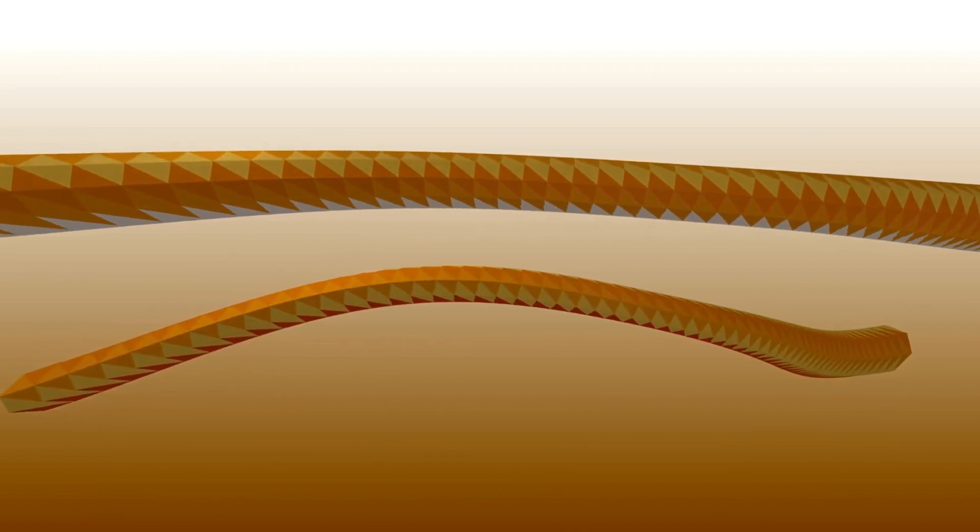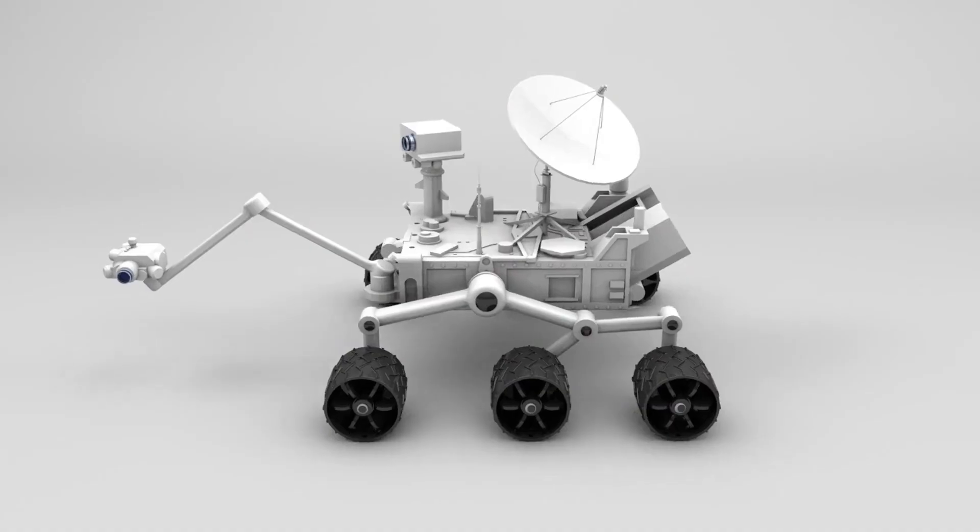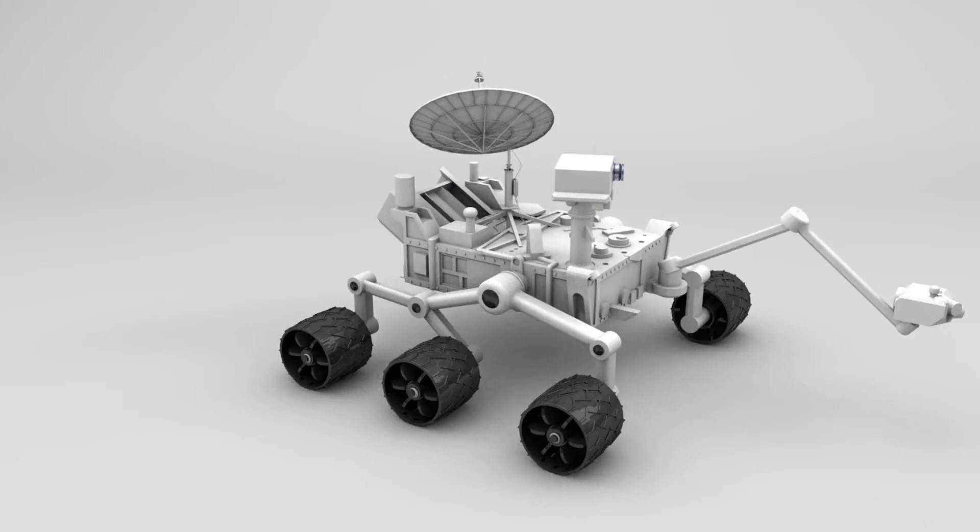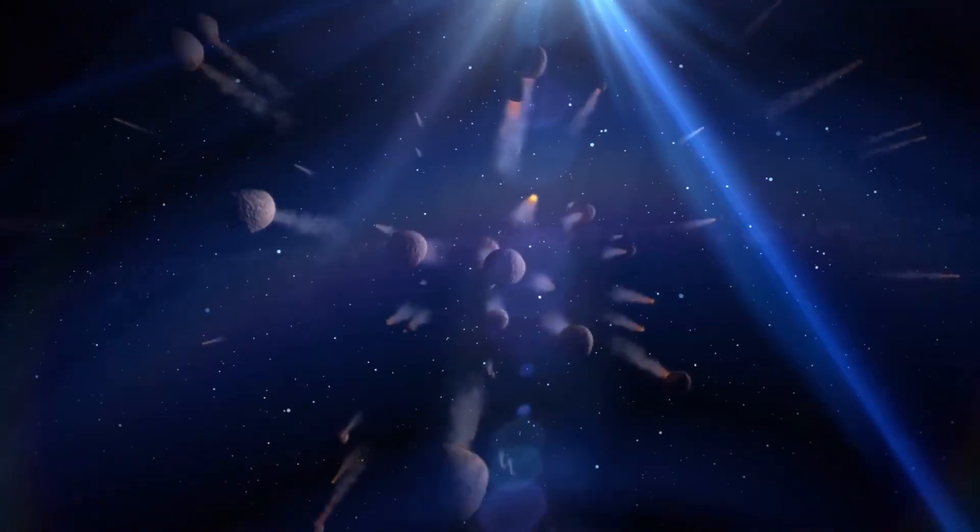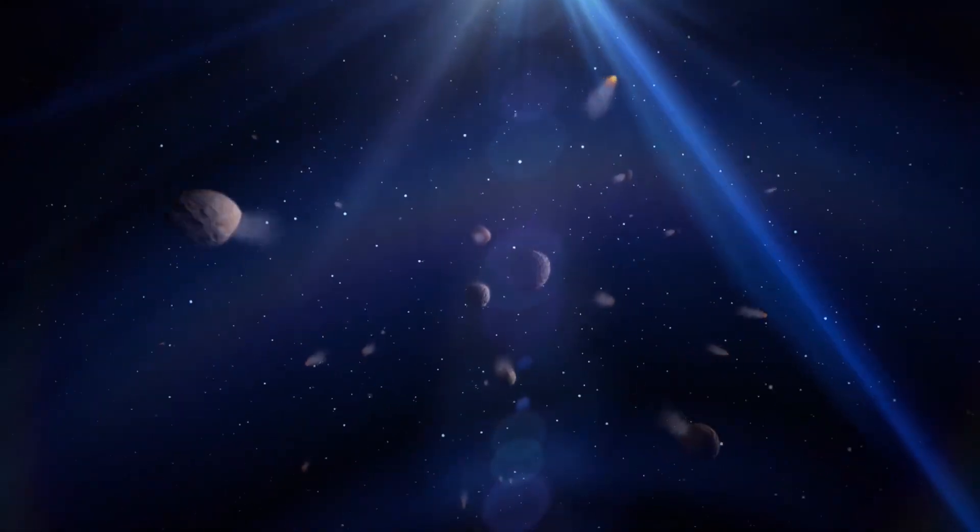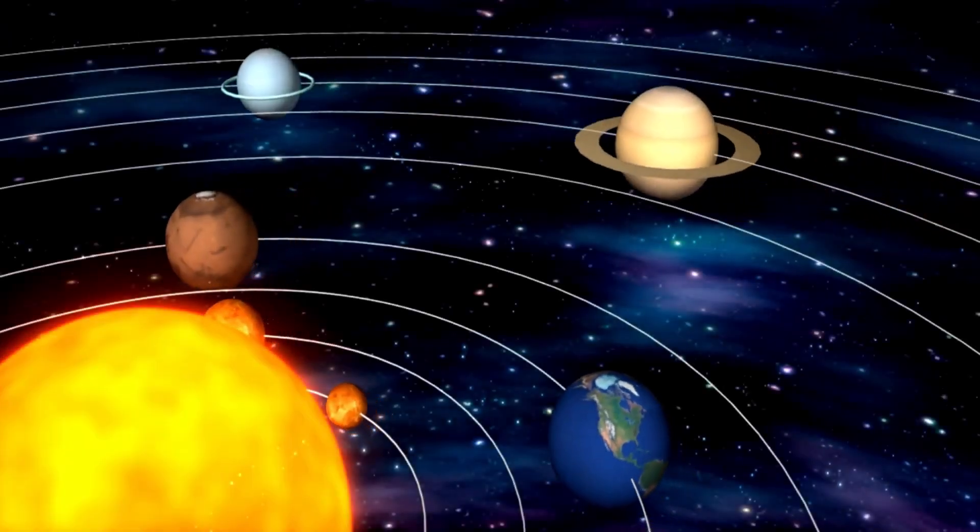A diminutive robotic spacecraft is poised to offer us the first intimate look at Pluto, a mysterious and icy world residing at the very edge of our solar system. Orbiting within what we call the Kuiper Belt, Pluto is accompanied by thousands of other celestial objects, much like a cosmic sibling to our familiar asteroid belt.